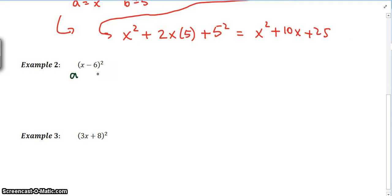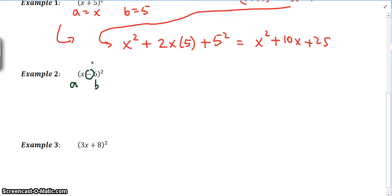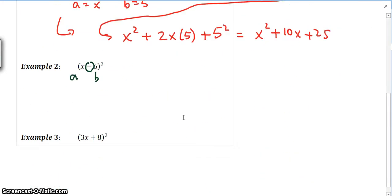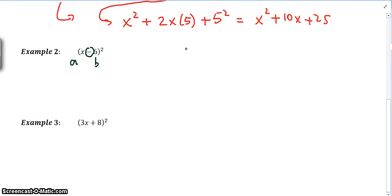This is going to be a and this is going to be b. Which rule are we going to use? You can see that the sign here is a minus, so we need to use the minus perfect squares rule. This becomes, let's just write the rule first: a minus b squared is the same as saying a squared minus 2ab plus b squared.